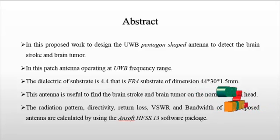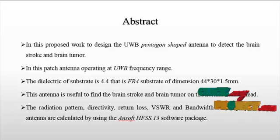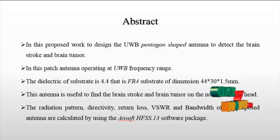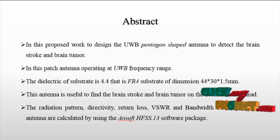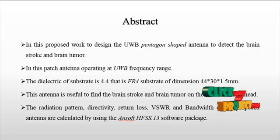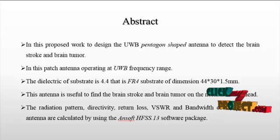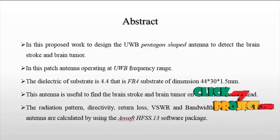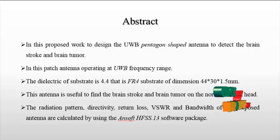The different radiating patches may be square, rectangle, thin strip, circular, elliptical, triangle, or any other configurations. The radiating element and feed lines are usually photo-etched on a dielectric substrate. A microstrip patch antenna is also a low profile antenna and has a number of advantages over other antennas.